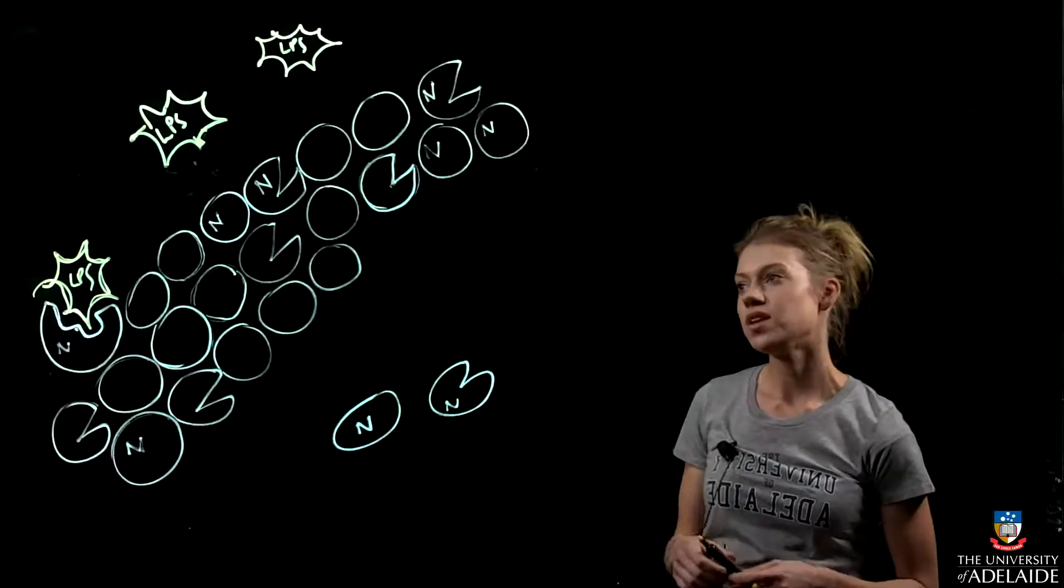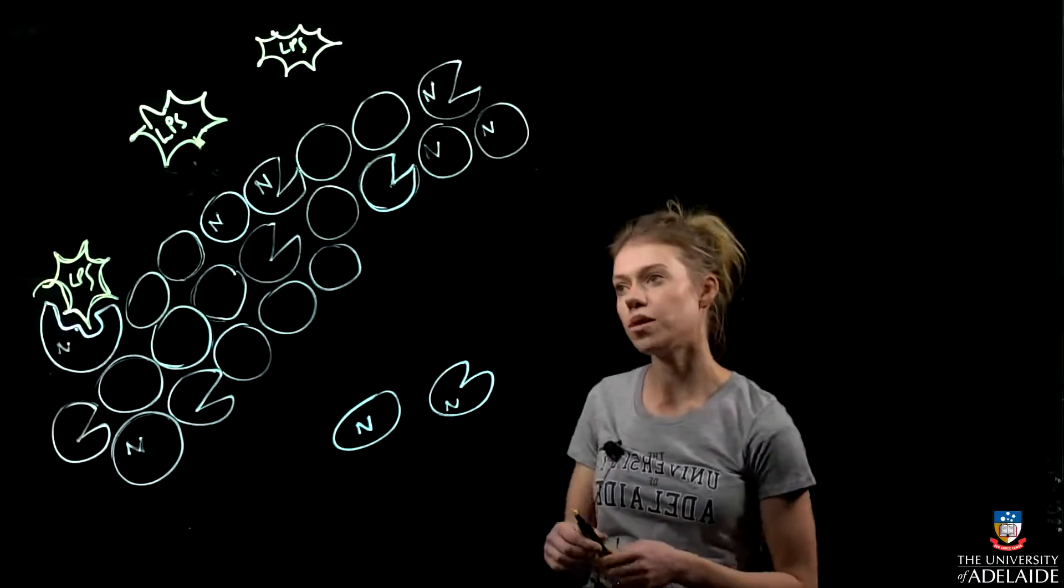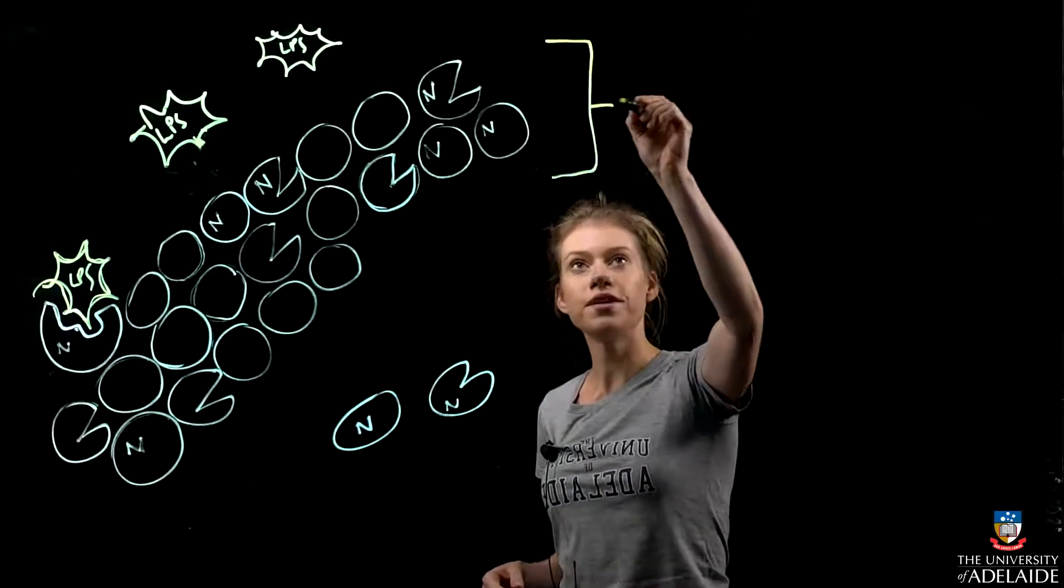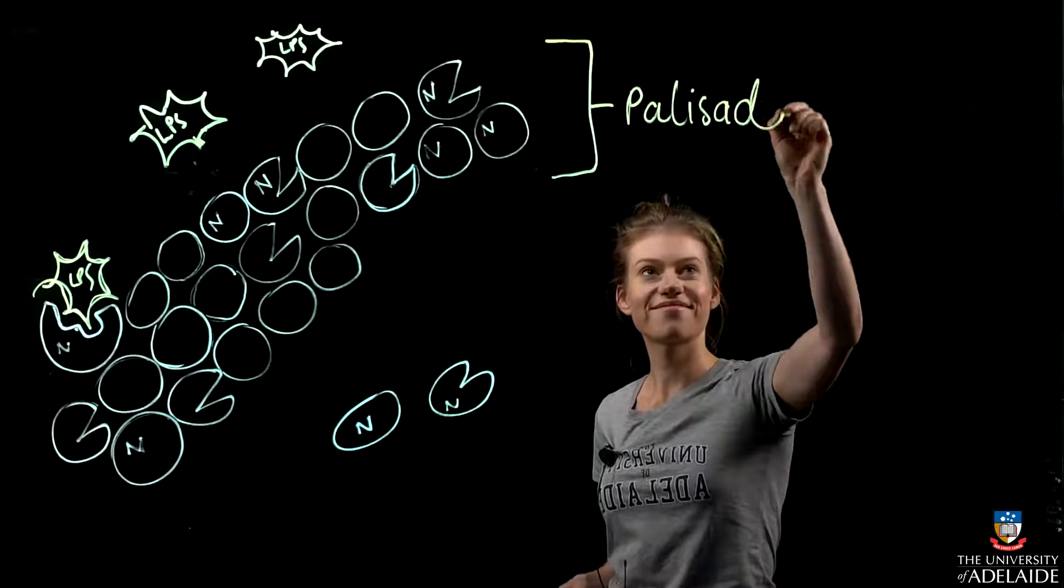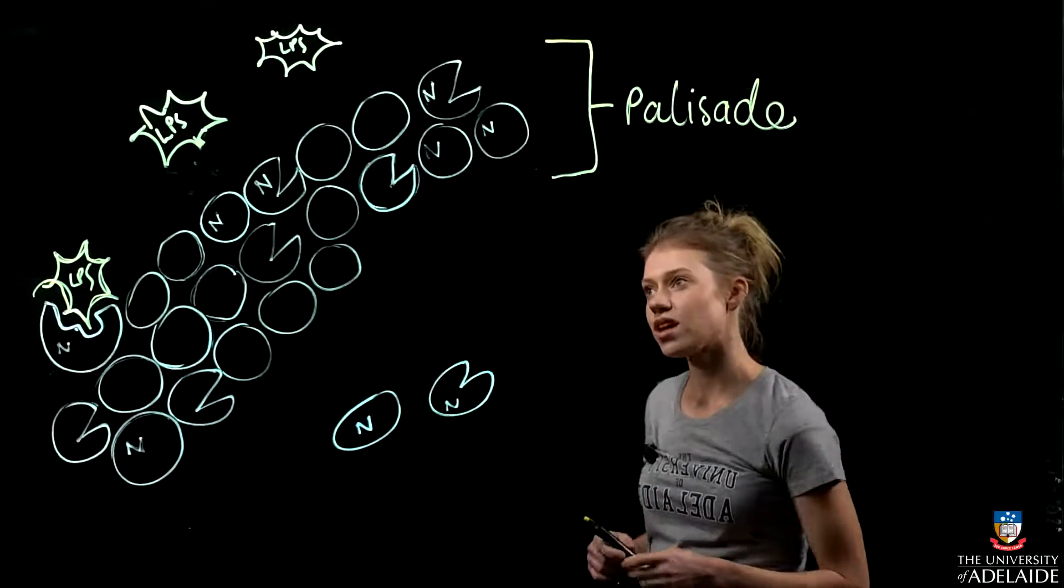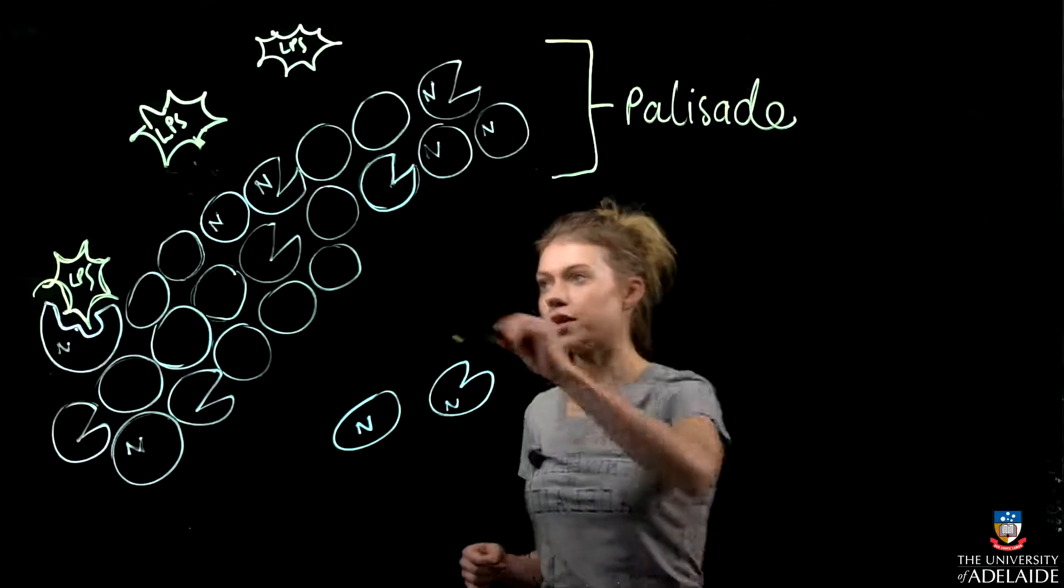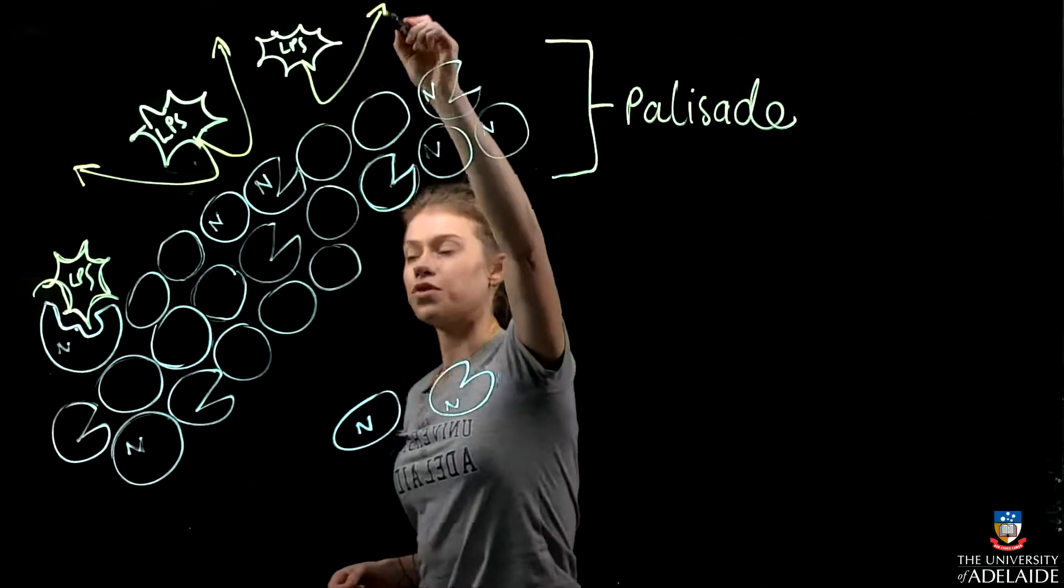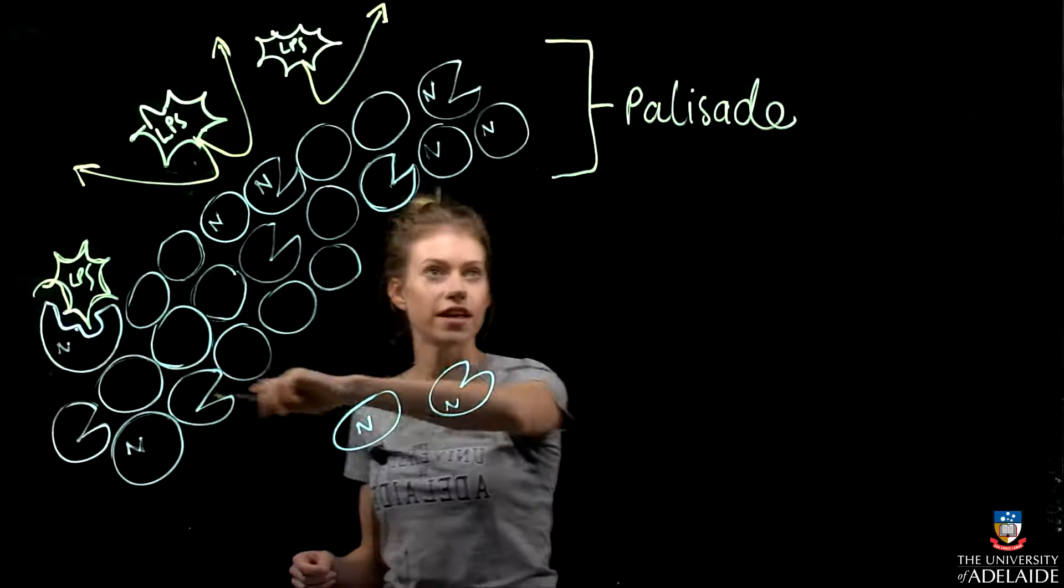In the junctional epithelium, the neutrophils as part of the first line of defense form a barrier, and this wall is known as a palisade. This palisade blocks the LPS endotoxins from coming through, blocks them there, and also engulfs the LPS.